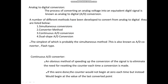Now, analog to digital conversion is the process of converting an analog voltage into the equivalent digital signal — meaning the wave is converted into either 0 or 1. There are different ways to perform analog to digital conversion, listed below.